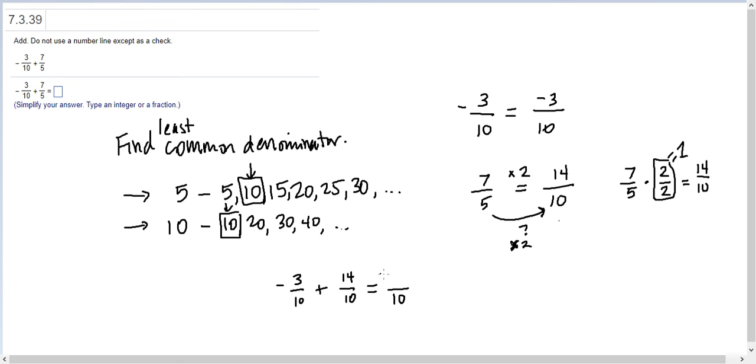Negative 3 plus 14—by the way, -3 plus 14 is the same as saying 14 minus 3. 14 minus 3 is 11. And so the final answer is 11/10.